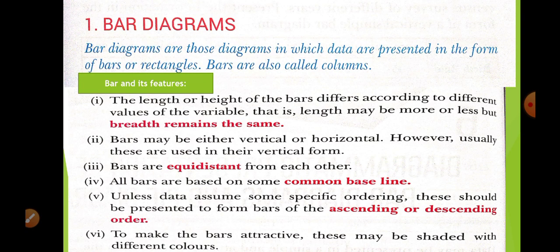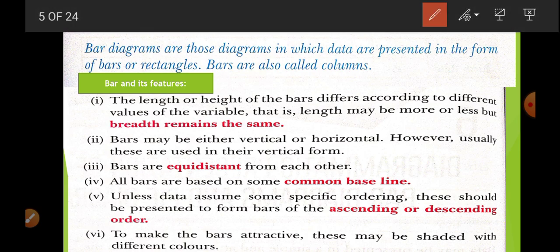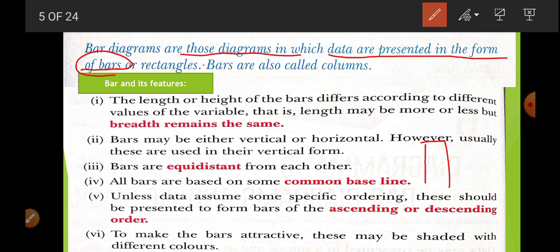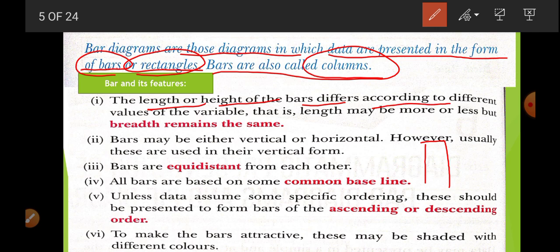Let us start with the bar diagram. Bar means rectangle. When we represent data with the help of rectangles, this is known as a bar diagram. Bar diagrams are those diagrams in which data are presented in the form of bars or rectangles. Bars are also called columns. The first feature is that the length or height of the bar is going to vary according to the value of the data - it can be long or short.